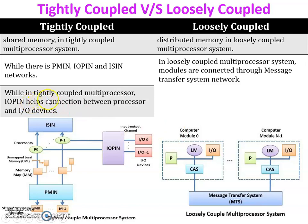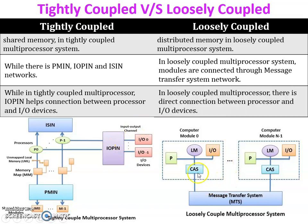In a tightly coupled multiprocessor system, IOPIN helps the connection between processors and input/output devices — as you can see, input/output devices are connected through the processor via the IOPIN network. In a loosely coupled system, input/output devices are directly connected to the processor.